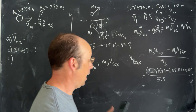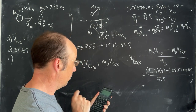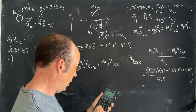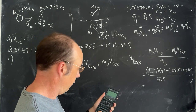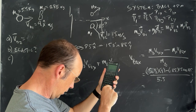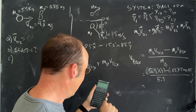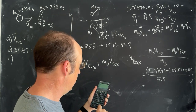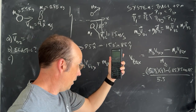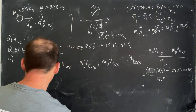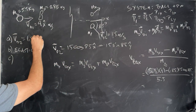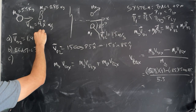Calculator time. 5.5 times 9, minus 0.85 times 15 cosine 85, all divided by 5.5. I get 1.43 x-hat — I'll leave the units at the end.